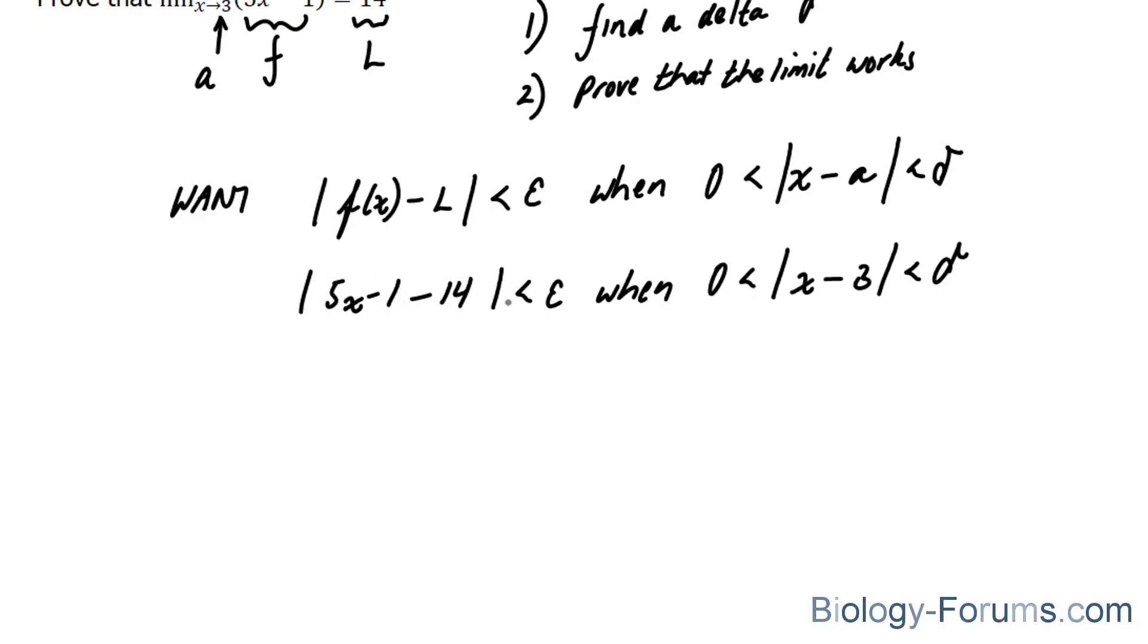Next, I'll simplify this: 5x minus 15, and those are absolute values, is less than epsilon. Factoring this gives us 5 times the absolute value of x minus 3 is less than epsilon.